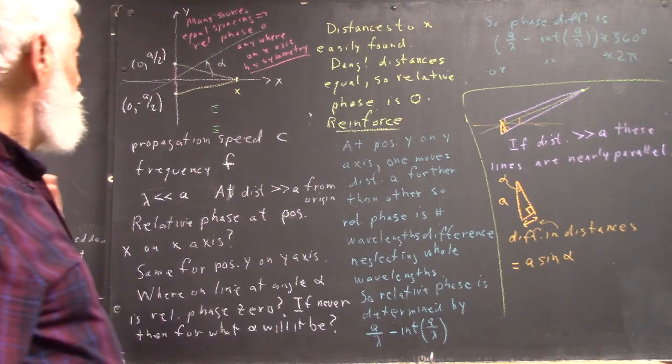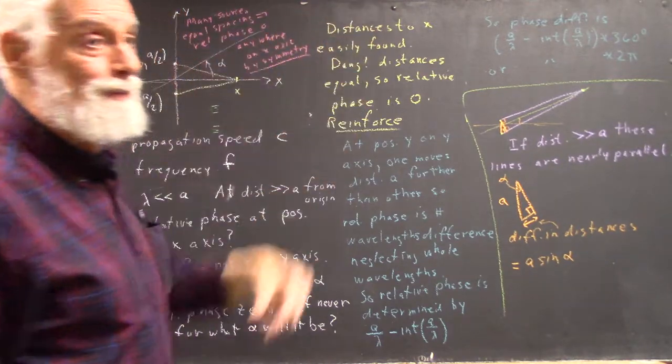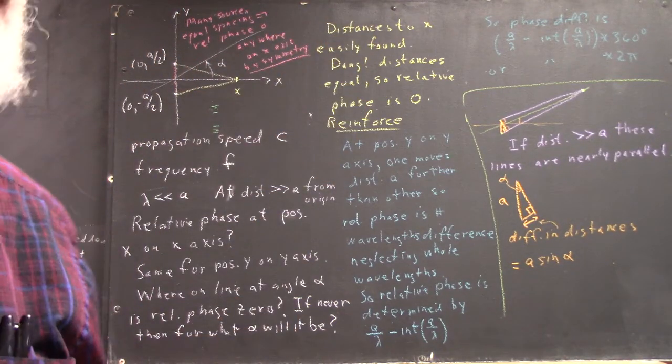Now the question is, what happens along this line at angle alpha?